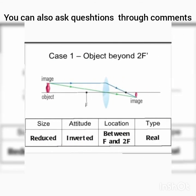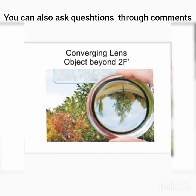Case 1: Object beyond 2f. Draw a ray parallel to the principal axis and a second ray through the optical center. The joining point gives the image. The image is located between f and 2f, is inverted, and is smaller in size compared to the object.